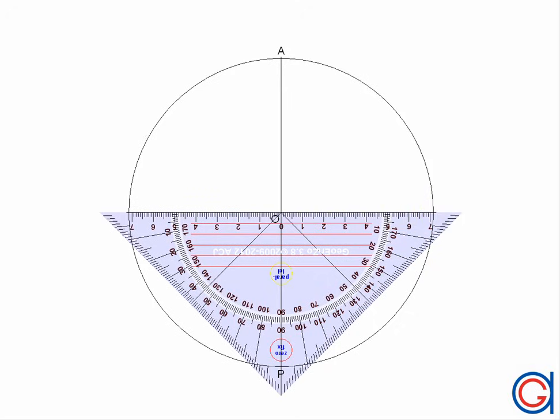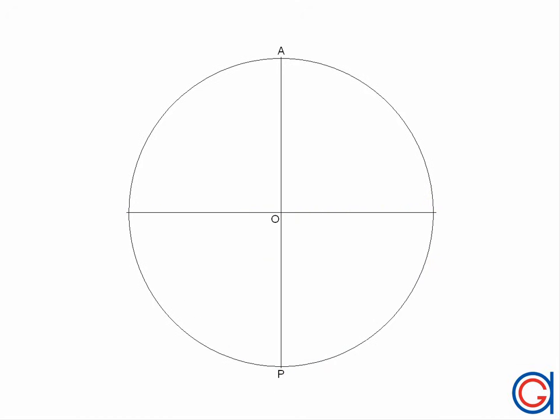Our new horizontal diameter will cut our circumference at two points which we will call Q and R. We will demonstrate that these two diameters are perpendicular by placing our perpendicular symbol as can be seen here.